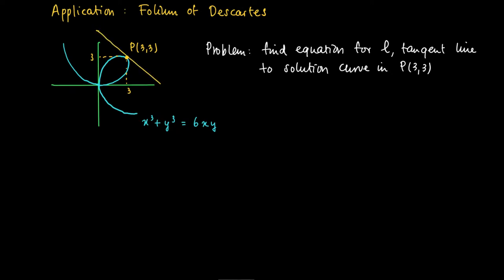We now want to have the tangent line at point (3,3), which is on the curve x to the power of 3 plus y to the power of 3 equals 6 times xy. And we want to find an equation for the tangent line L.